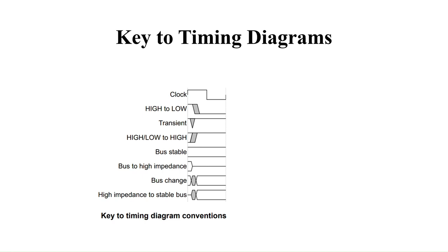Before understanding the waveforms, we need to understand timing diagram conventions, as these play a major role. The first one is the clock signal. The second is a high-to-low transition — if the signal goes from high to low, the shaded gray part represents an undefined value where the signal can assume any value. Next is the transient state. Then high-to-low with a shaded undefined part — this is the timing diagram for a high-to-low signal.